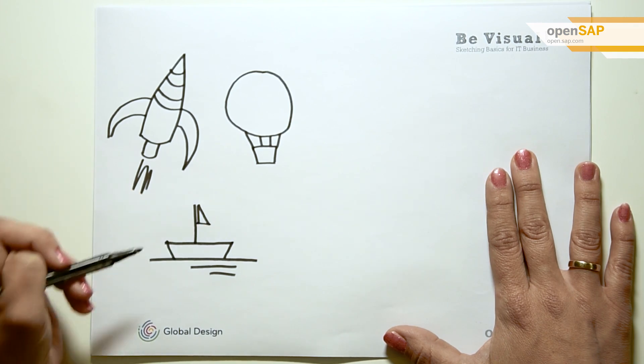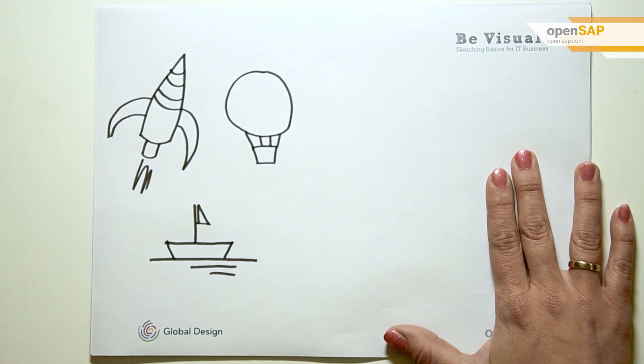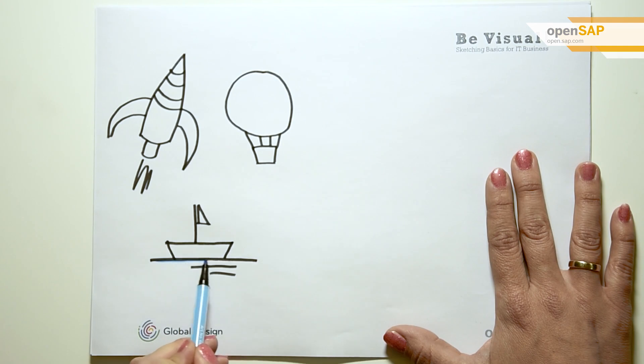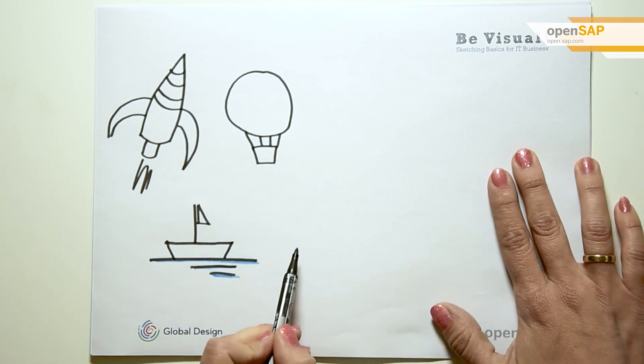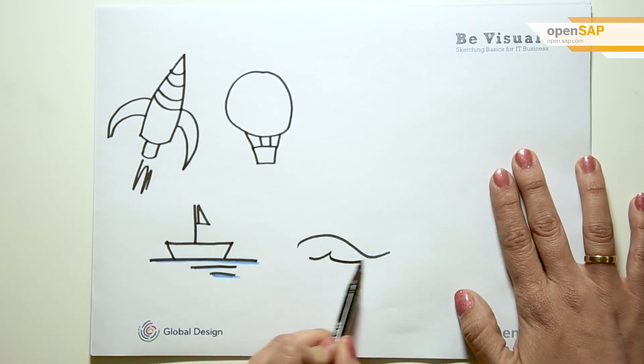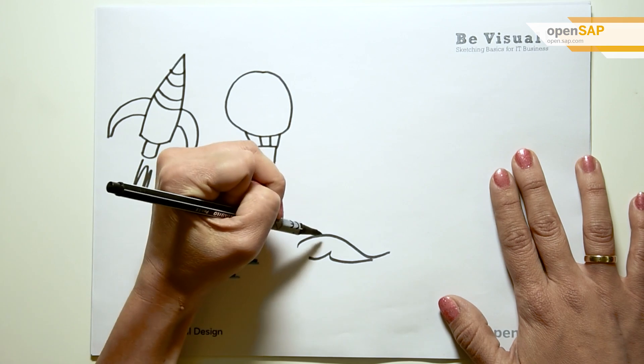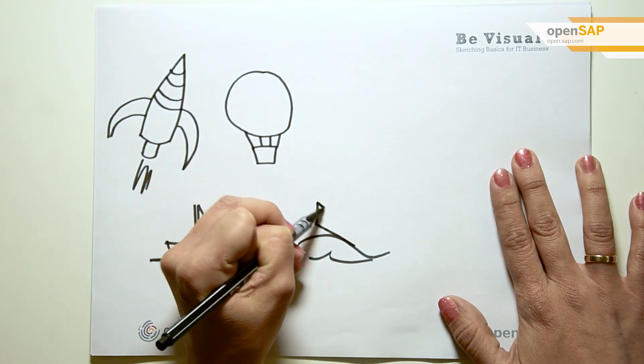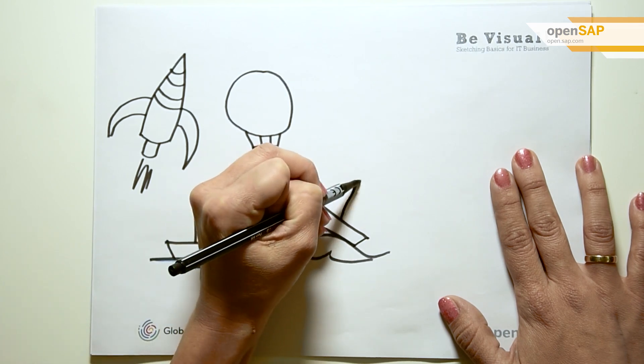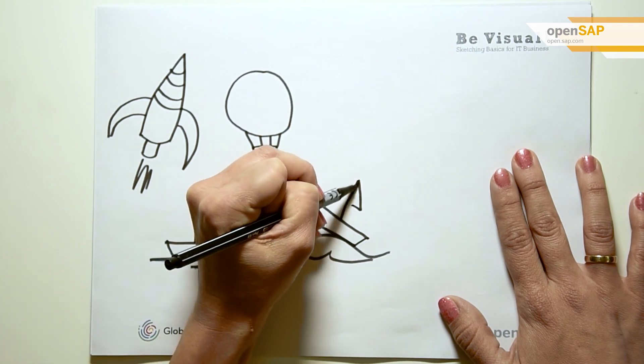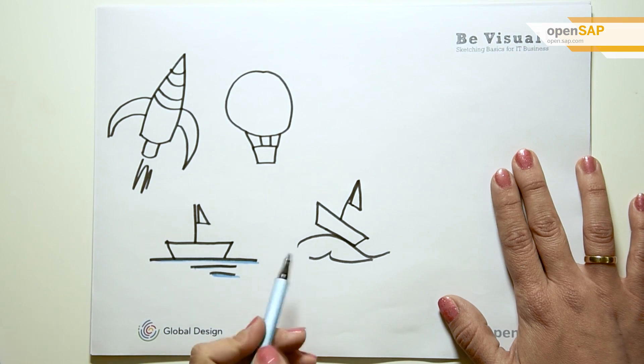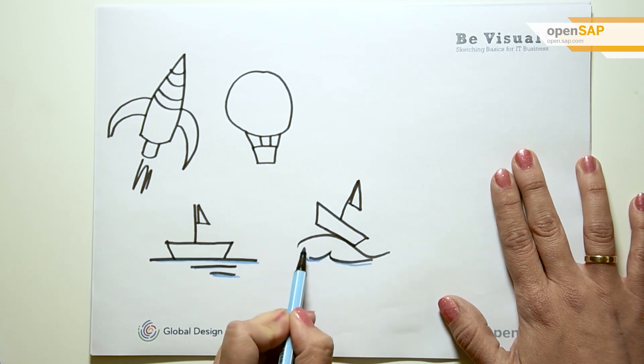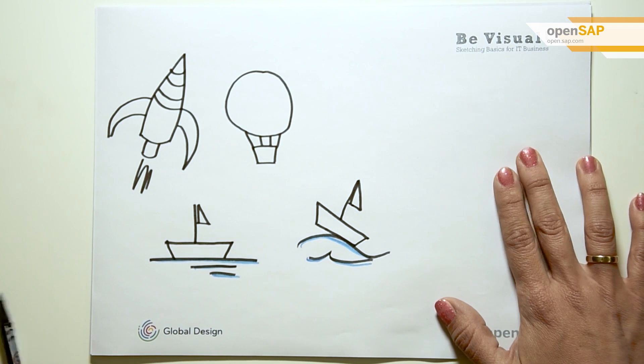Sketch the quiet sea - this represents a calm, stable situation. Now sketch the sea with some subtle waves. Now sketch the sea with high waves - this represents vitality, risk, danger.